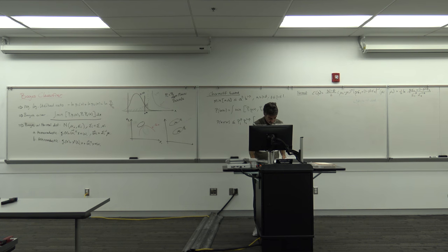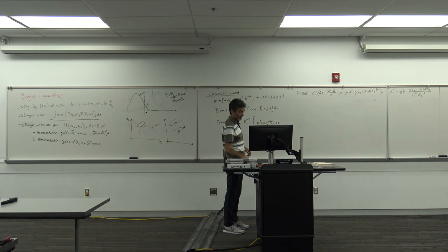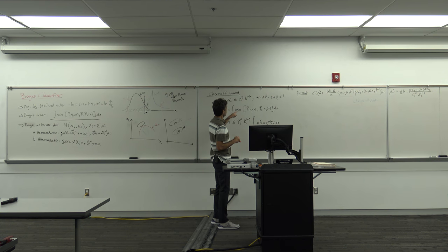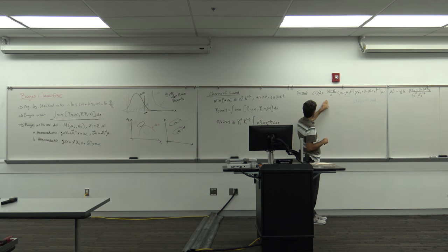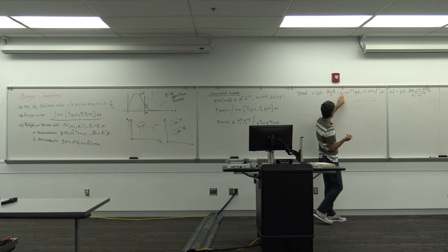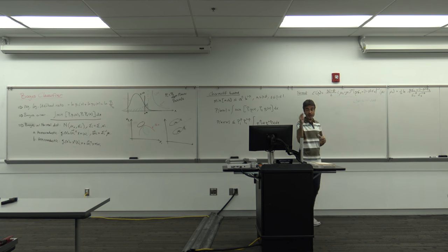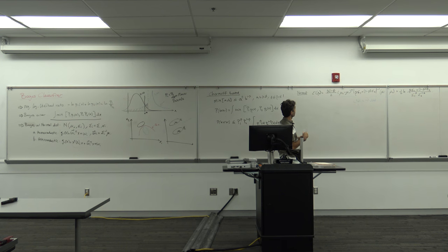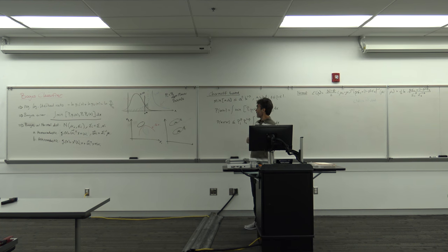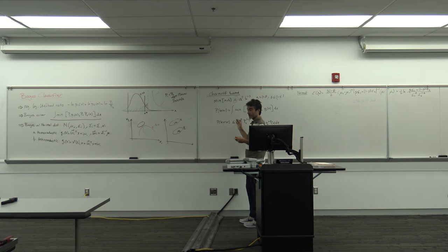For the Chernoff bound with normal distributions, everything is computable: mu1, mu2 are sample means, sigma1, sigma2 are sample covariance matrices. The only unknown is beta. If priors are equal, the optimal beta is 1/2, giving a computable upper bound on the base error.